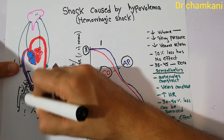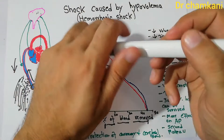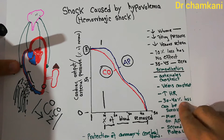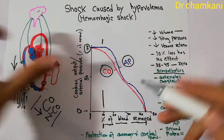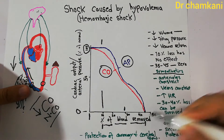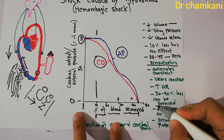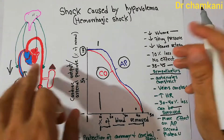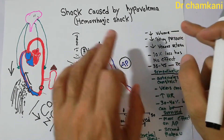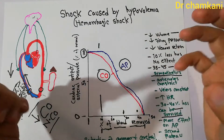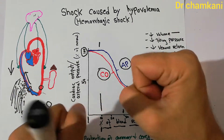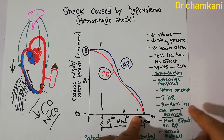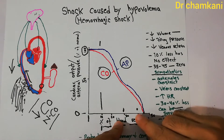The advantage of sympathetic system activation is that up to 30 to 40% of blood loss can be survived. Even up to 40% of blood can be removed and the patient can still survive. The sympathetic system, activated due to decreased venous return, decreased filling pressure, and decreased volume, starts different changes in the circulatory system — constricting arterioles, increasing venous return, and increasing heart rate — all of which help in surviving such a high blood loss.